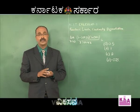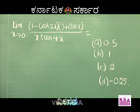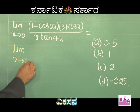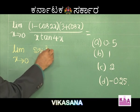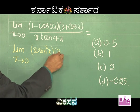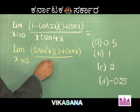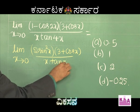This next problem is taken from the Joint Entrance Exam. The question is: limit x tends to 0 of (1 minus cos 2x)(3 plus cos x) divided by x·tan 4x. The options are (A) 0.5, (B) 1, (C) 2, and (D) minus 0.25. We know that 1 minus cos 2x equals 2 sin squared x, so we rewrite the expression accordingly.